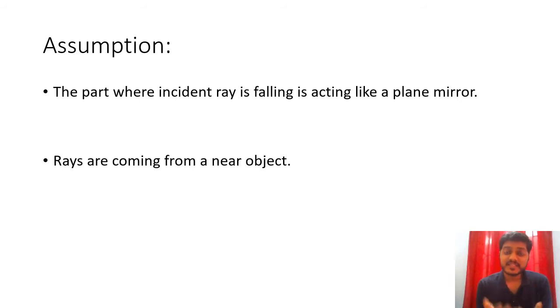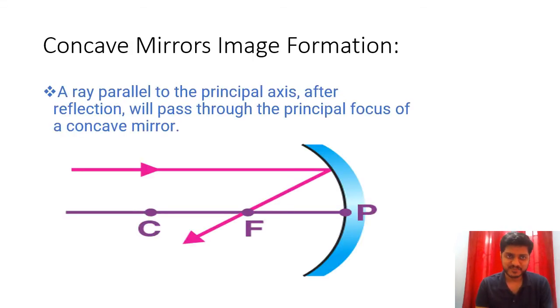So now there are some assumptions such as the incident ray which is falling on a spherical mirror. It is considered as so small space that it acts like a plane mirror. And the rays are coming from a nearer object because if they are coming from the farther objects, the rays will be in random in nature and no clear picture will be found. So these are the assumptions.